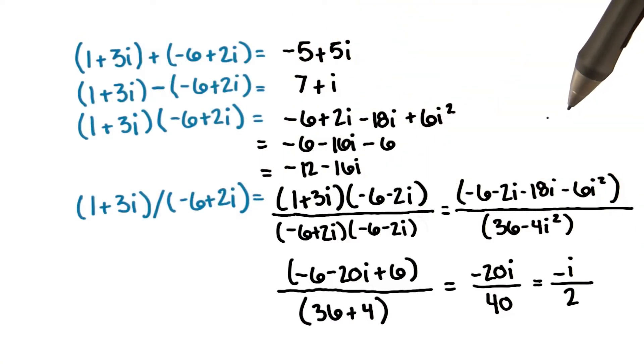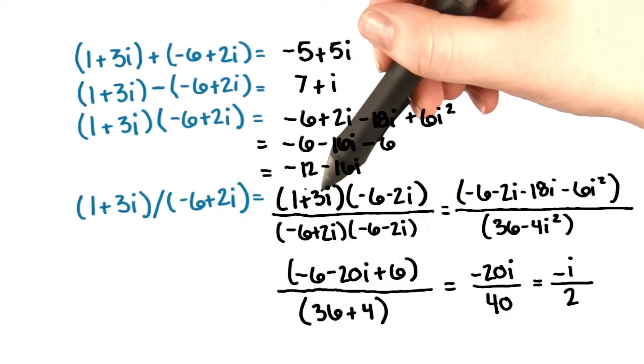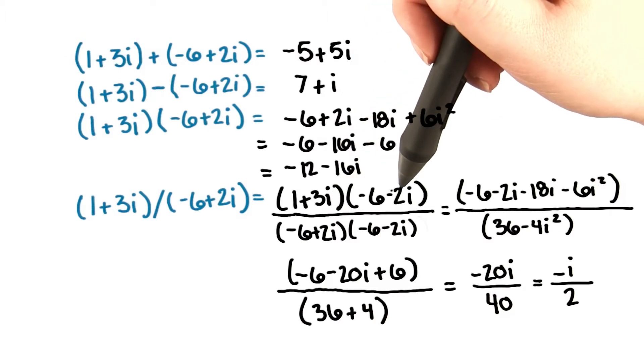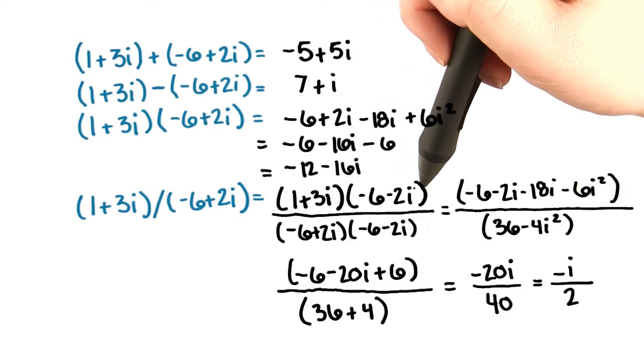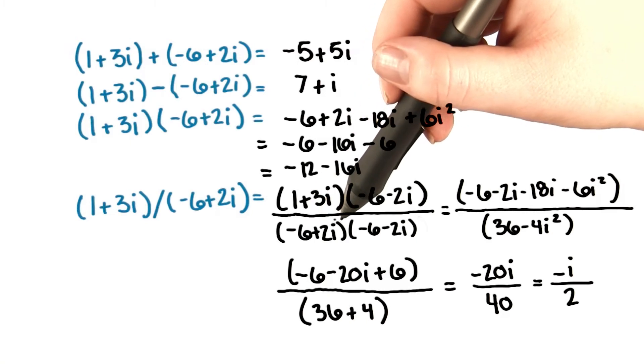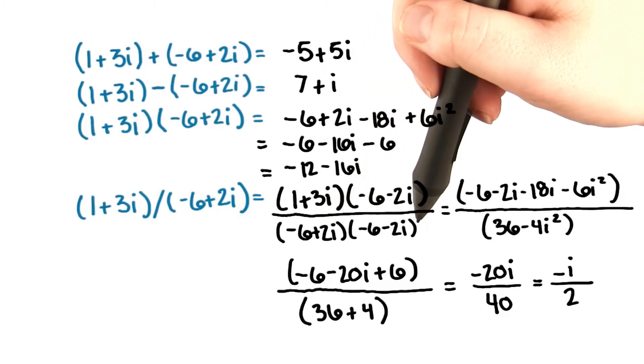Now let's look at the problem. 1 plus 3i divided by negative 6 plus 2i gives us 1 plus 3i times the conjugate negative 6 minus 2i divided by negative 6 plus 2i times negative 6 minus 2i.